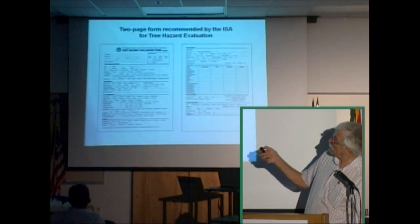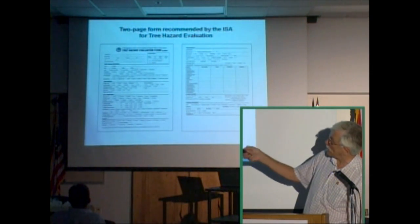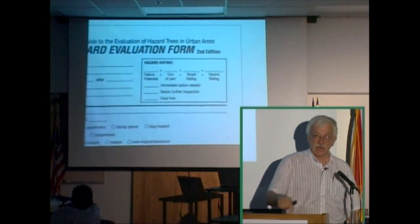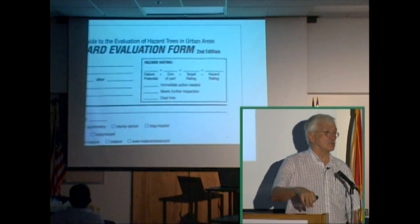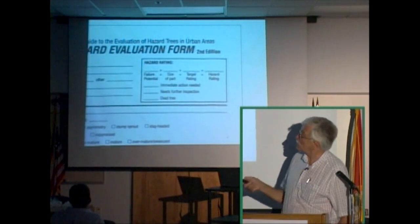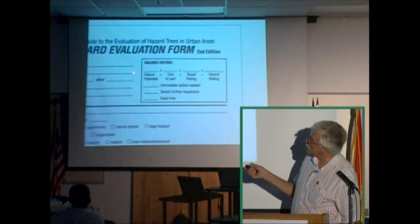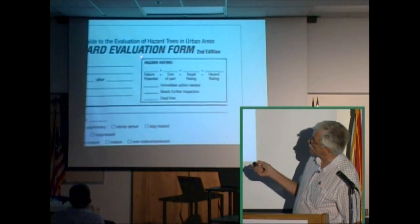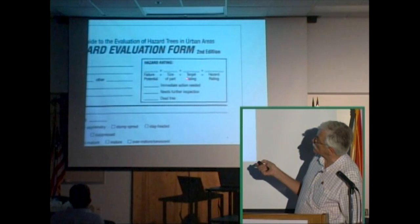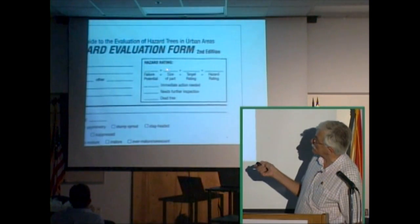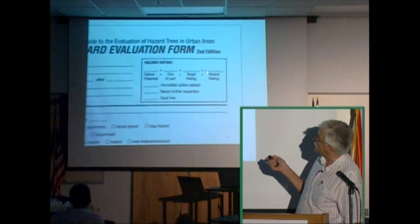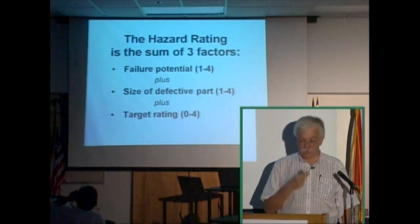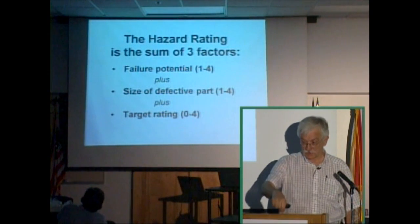The upper left-hand corner of the front page of the form has a little box where all the observations you've made get summarized into three numbers. The first number is the failure potential of the tree. The second number is the size of the part of the tree that might fail. The third number is the target rating. Those three numbers added together equal the hazard rating.